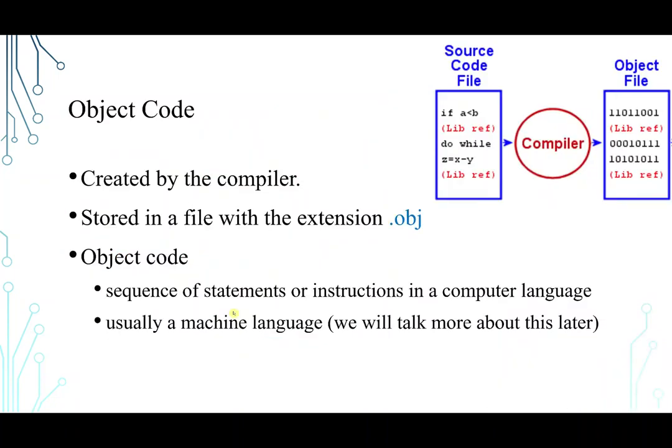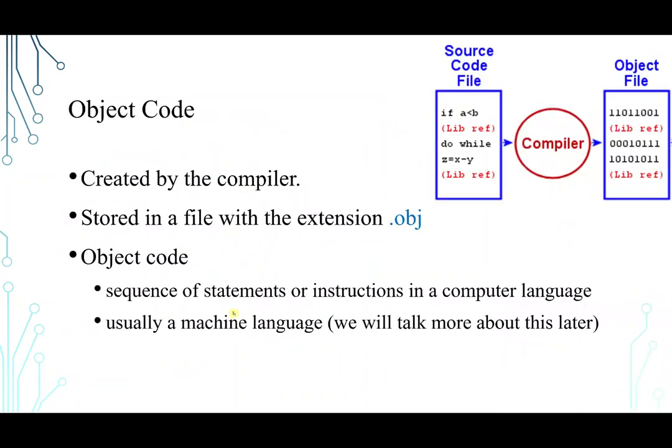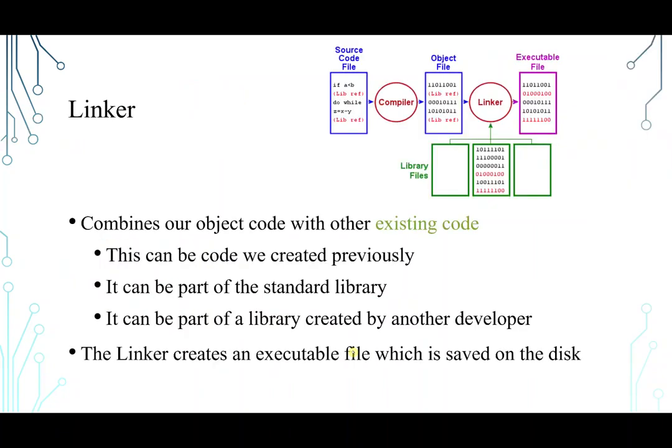So the object code is created by the compiler. It's stored in a file with the extension .obj. So basically, this scenario is about how the compiler is going to get you to fix the errors, the syntax errors, spelling and grammars, right? Until it has a clear idea what to put in the object code. So object code is going to have a sequence of statements or instructions in a computer language, usually machine language. And as I said, we are going to talk about this more and more during the quarter.